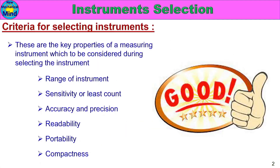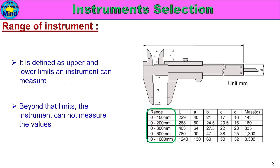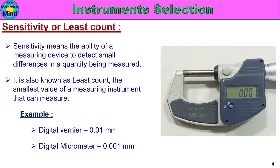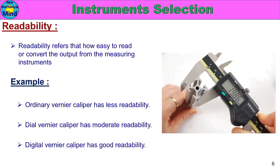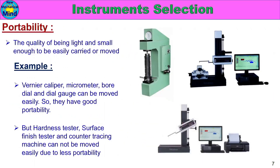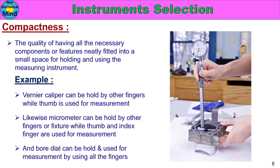In this video, we will see the criteria for selecting instruments: range of instruments, sensitivity or least count, accuracy and precision, readability, portability, and compactness. We will see all the details in detail.